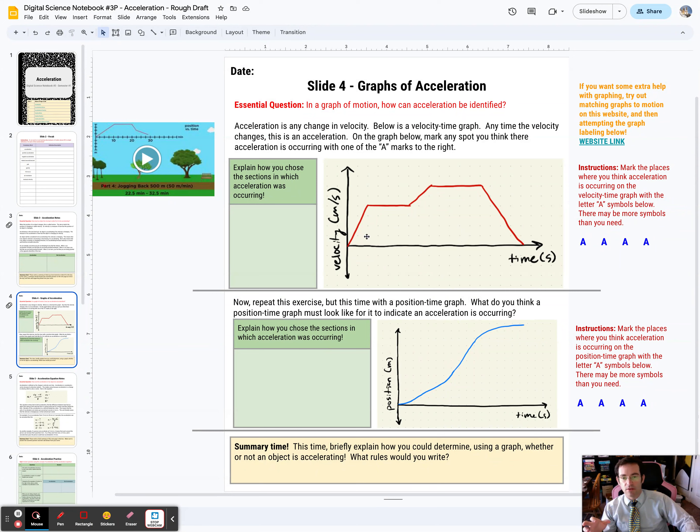Remember it's not just marking it. You also have to explain why did you pick those sections. Why do you think those sections count as acceleration. And when you're all done since this is a note page, write a quick summary of how do you know whether or not something is accelerating based on these types of graphs. So kind of give, if you were to give a hint to someone or explain this to someone, how would you do that.